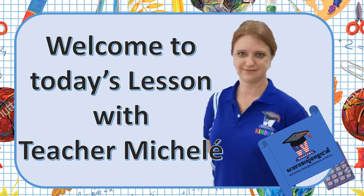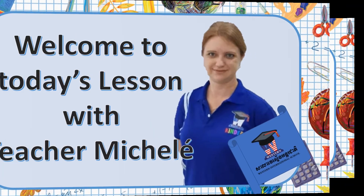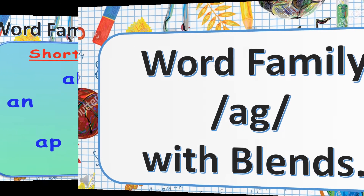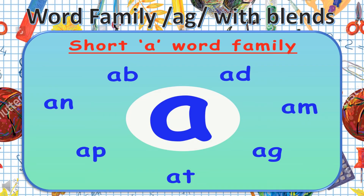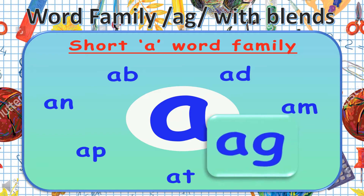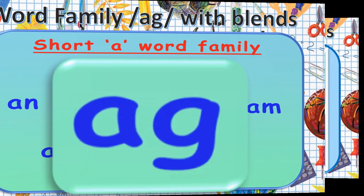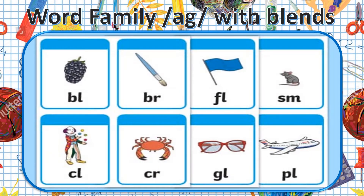Hello and welcome to today's lesson with teacher Michelle. Today we are doing word family AG with blends. We have already learned that the vowel A has 7 families for the short sound A. Today we are going to focus on the AG sound. We have also learned that when two letters work together with their sounds, it is called a blend.